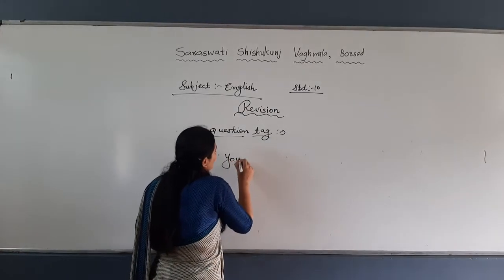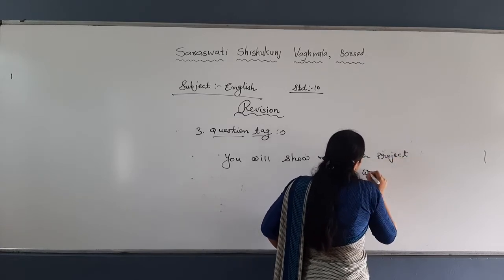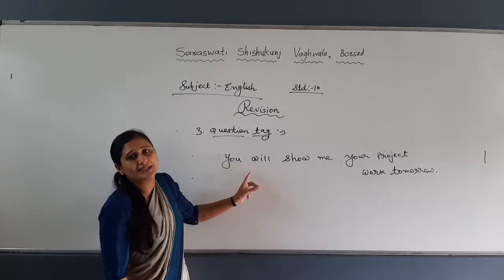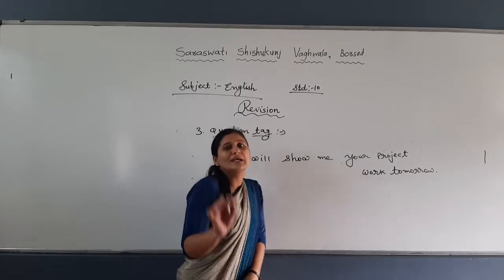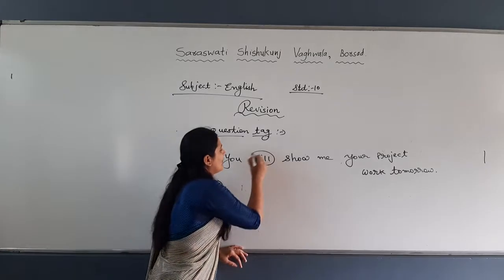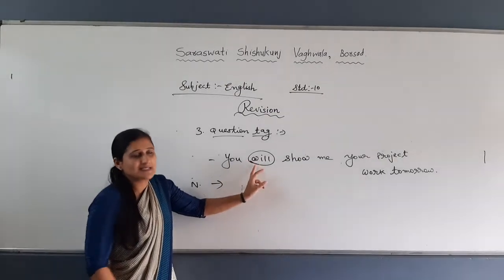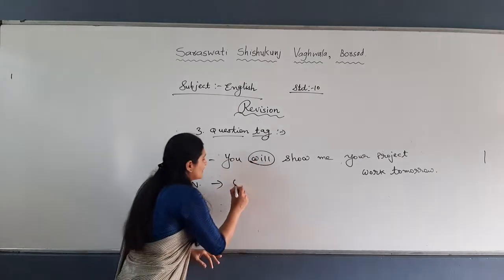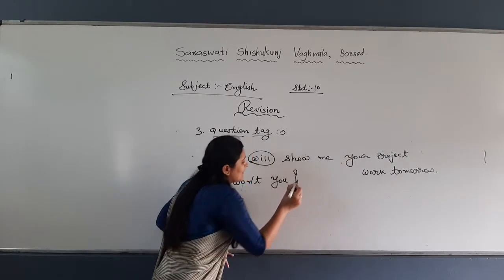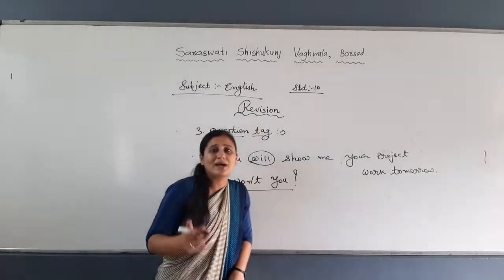Let's have an example: 'You will show me your project work tomorrow.' Check — sentence is positive, so the question tag will be negative. Check what verb is given: 'will' — an auxiliary in future tense. The negative form of 'will' is 'won't.' The subject 'you' stays as 'you.' So the question tag is: 'won't you?' Question mark is a must. Answer: 'You will show me your project work tomorrow, won't you?'